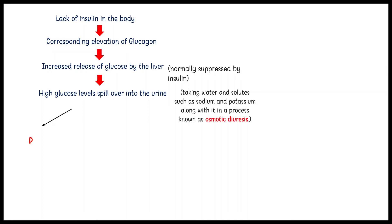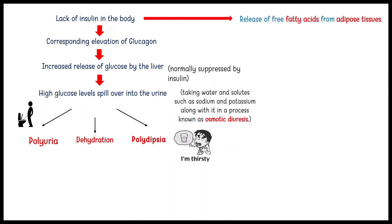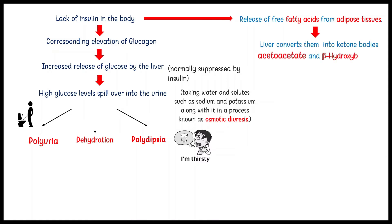This leads to polyuria, dehydration, and polydipsia. The absence of insulin also leads to the release of free fatty acids from adipose tissue, which the liver converts into ketone bodies.